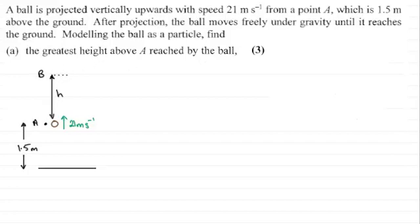Now when it gets to the top here the ball is going to come to instantaneous rest. So I'll just mark that in as 0 meters per second. And the other thing that I need to add to this diagram is the acceleration due to gravity which acts vertically down. So that's going to be G. And I'm going to take G as equaling 9.8 meters per second per second.